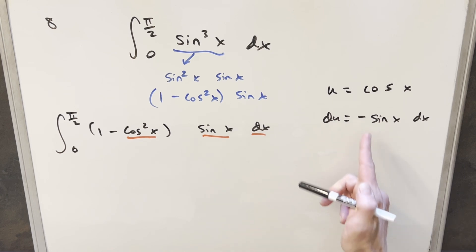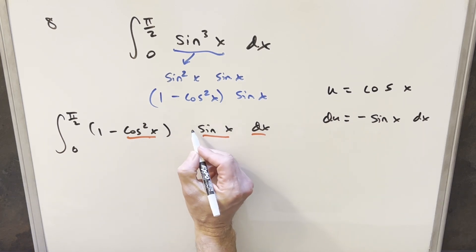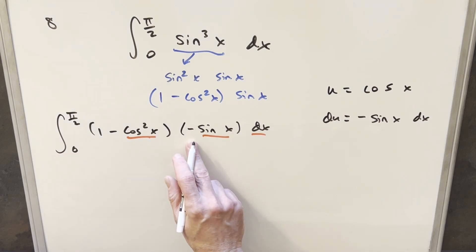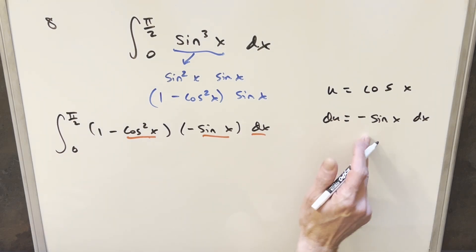Because we have a minus here, I want everything to be exactly du. So I'll multiply by minus, and then this is exactly our du. I'll bring a minus sign out front.